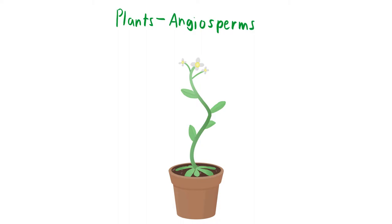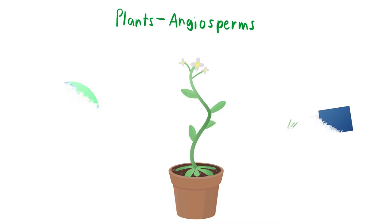Let's talk about plants, specifically flowering plants, also known as angiosperms. It's important to remember that angiosperms help maintain the oxygen content of the Earth's atmosphere, and that agriculture is almost entirely dependent on them.